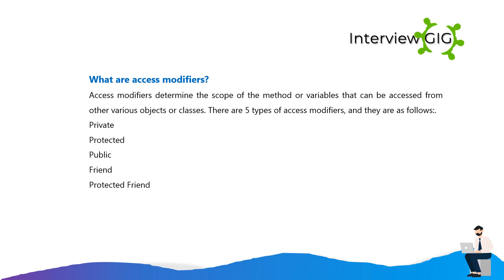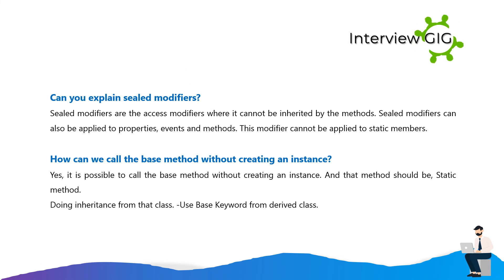What are access modifiers? Access modifiers determine the scope of the method or variables that can be accessed from other various objects or classes. There are five types of access modifiers: Private, Protected, Public, Friend, and Protected Friend. Can you explain sealed modifiers? Sealed modifiers are the access modifiers where it cannot be inherited by the methods. Sealed modifiers can also be applied to properties, events and methods. This modifier cannot be applied to static members.